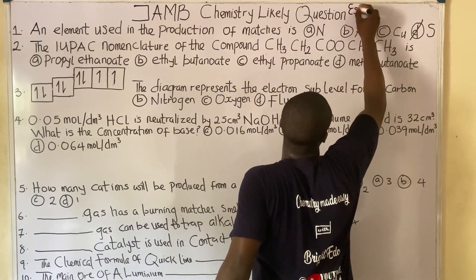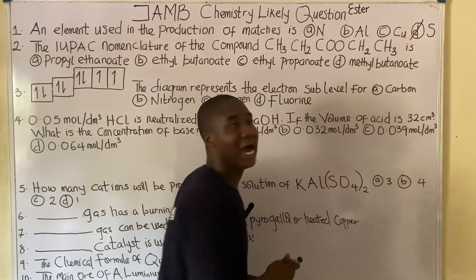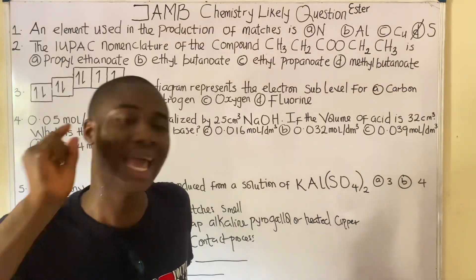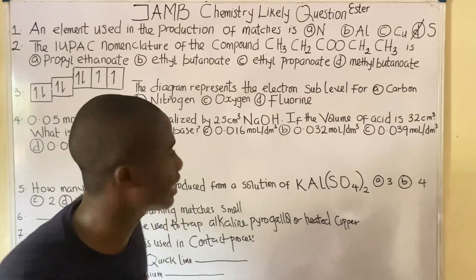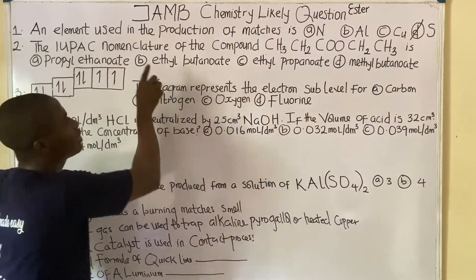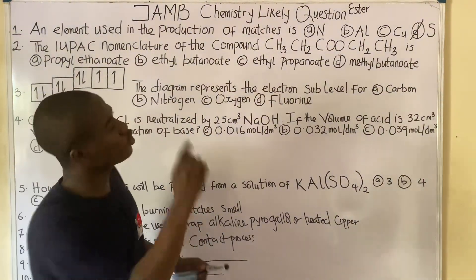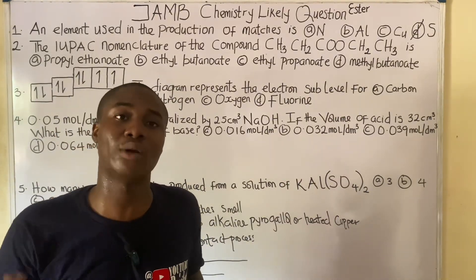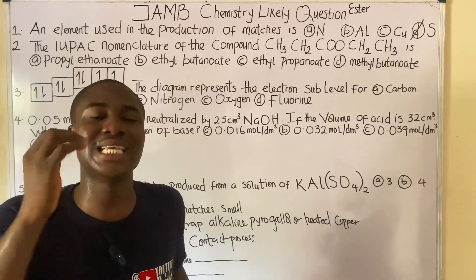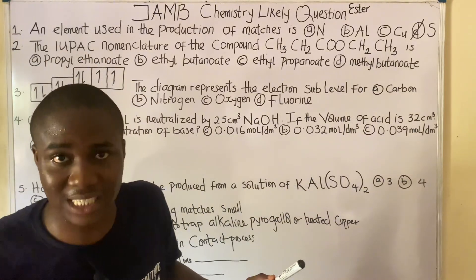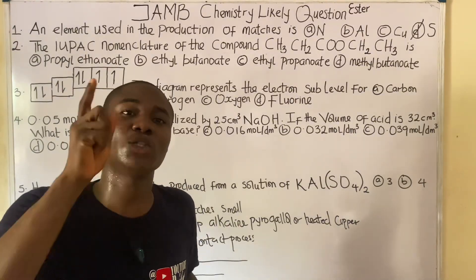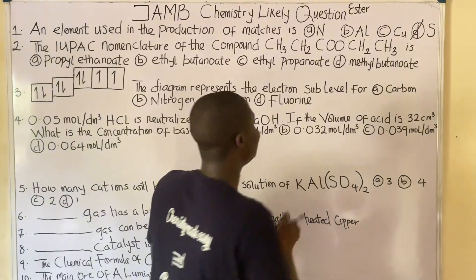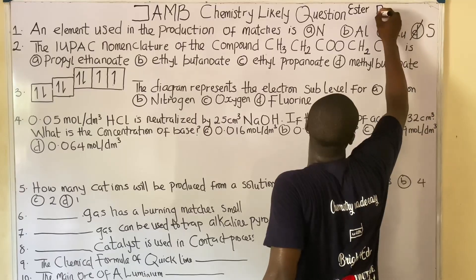It must be noted that esters are also called alkanoids. If you observe, all the options end with '-oate'. So this compound is an ester, also regarded as an alkanoid. The general formula for esters is R-COO-R, where R represents alkyl groups.